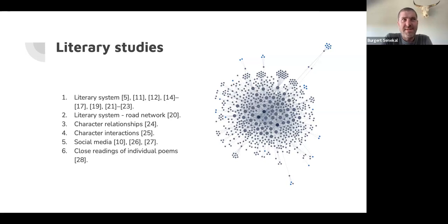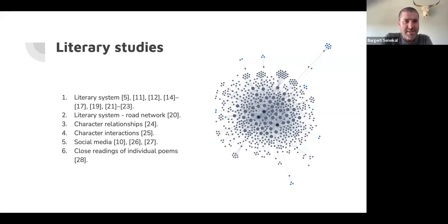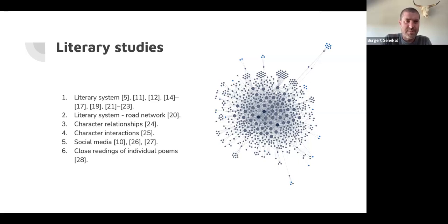The most common application of network science in literary studies is character interactions — which characters are talking to each other. A famous example is Franco Moretti, who looked at character interactions in Shakespeare's Hamlet. I've also seen interesting studies on medieval Icelandic sagas. I did one study looking at character interactions in Piffenbeck Lowe's Germanicus, and in that article I gave an overview of similar studies done overseas. The challenge with micro level studies is ending up with conclusions like 'Harmonicus is the main character in the play called Harmonicus,' which doesn't tell us much.